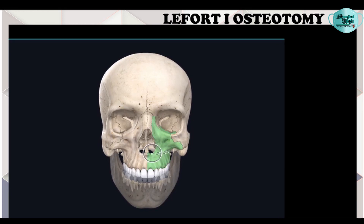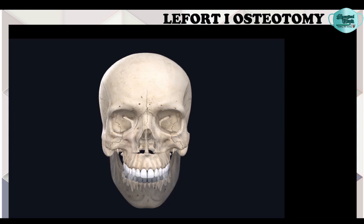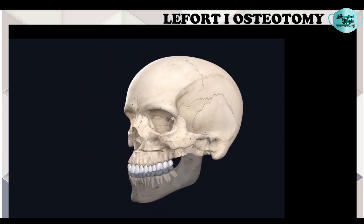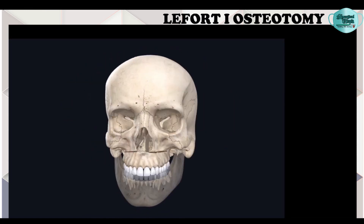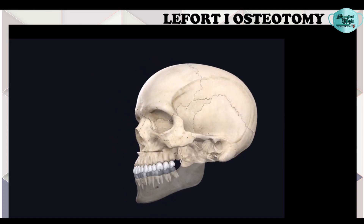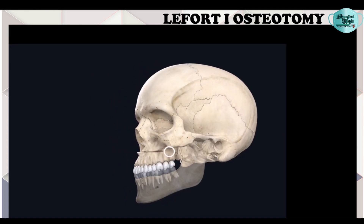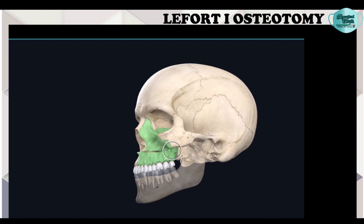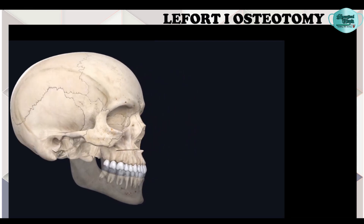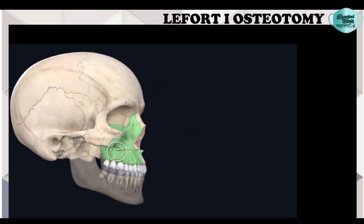Once exposure is achieved, osteotomy cuts are made. The first cut is made at the lateral maxillary buttress, directed toward the ipsilateral piriform rim. The same procedure is repeated on the contralateral side. A second, thin osteotomy cut is then given to complete the posterior osteotomies of the lateral and medial maxillary buttresses.